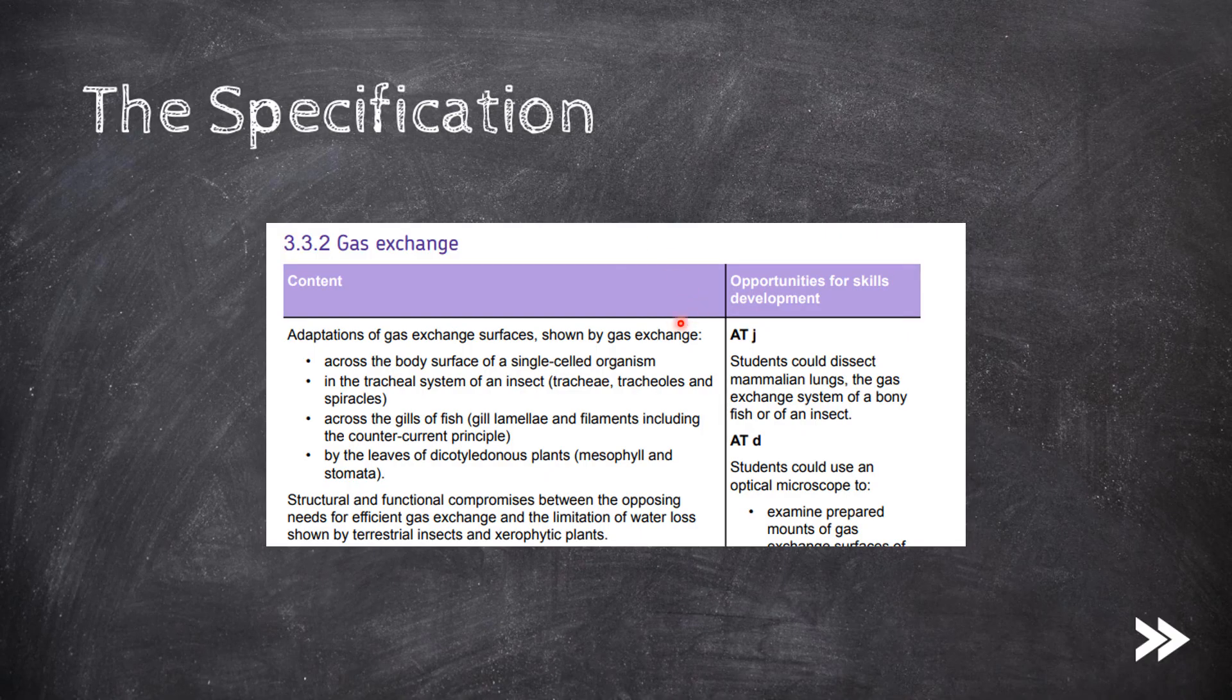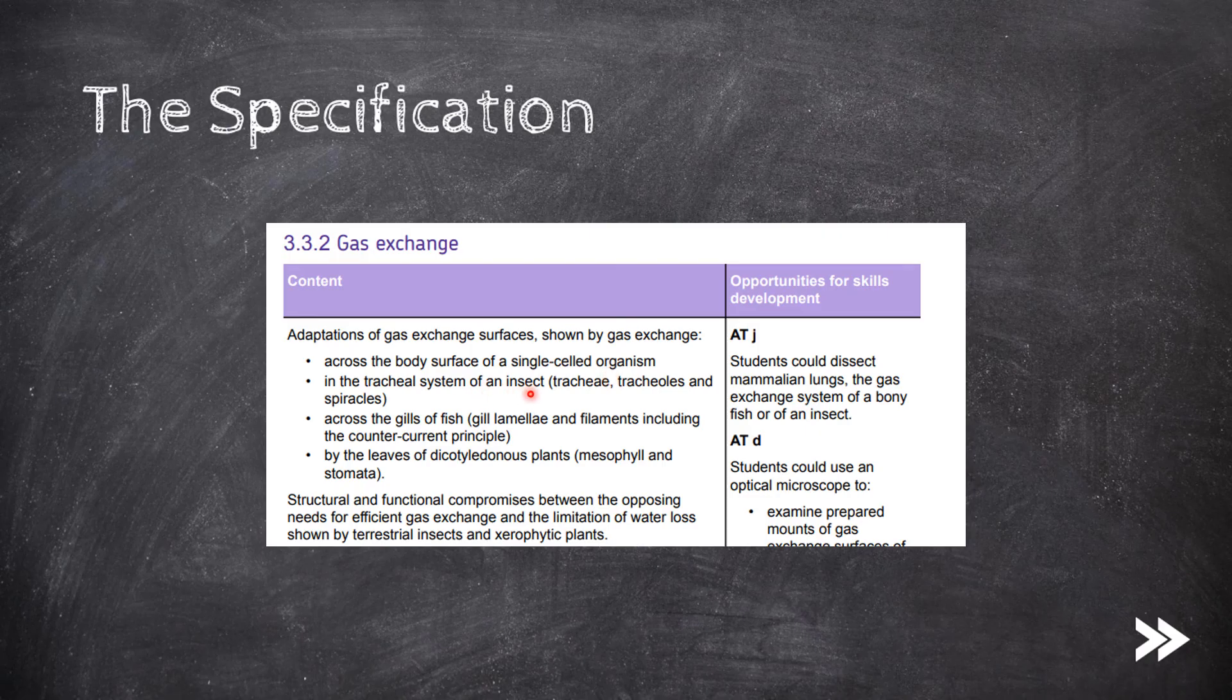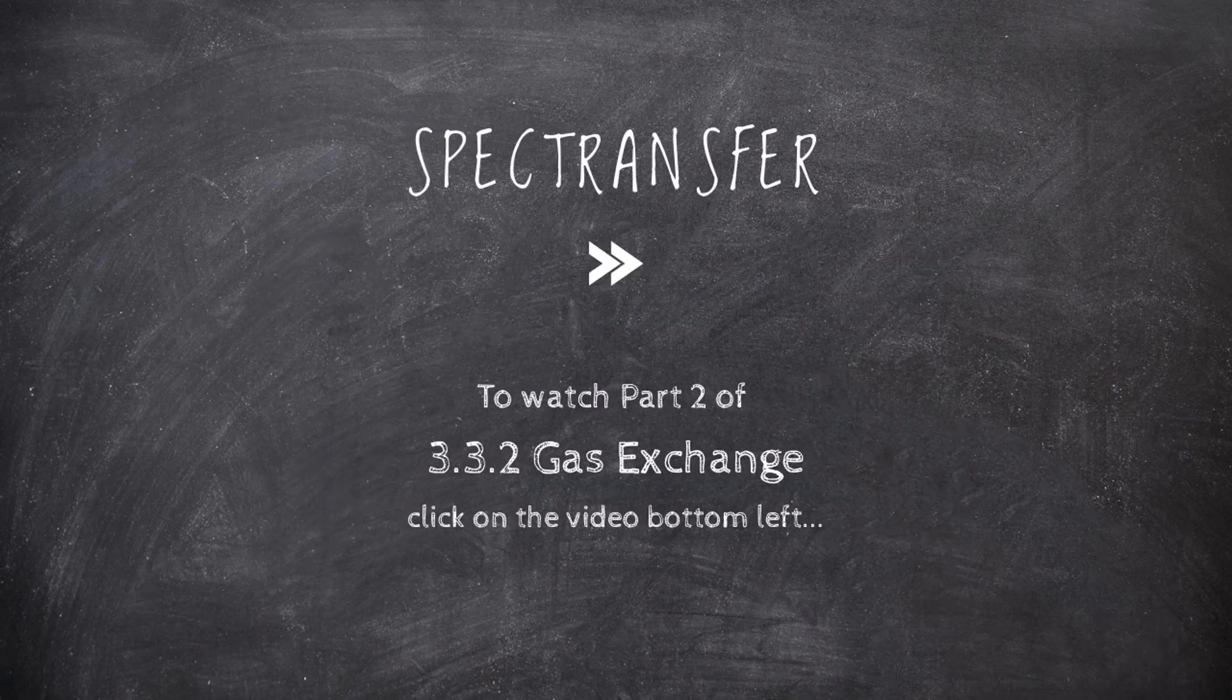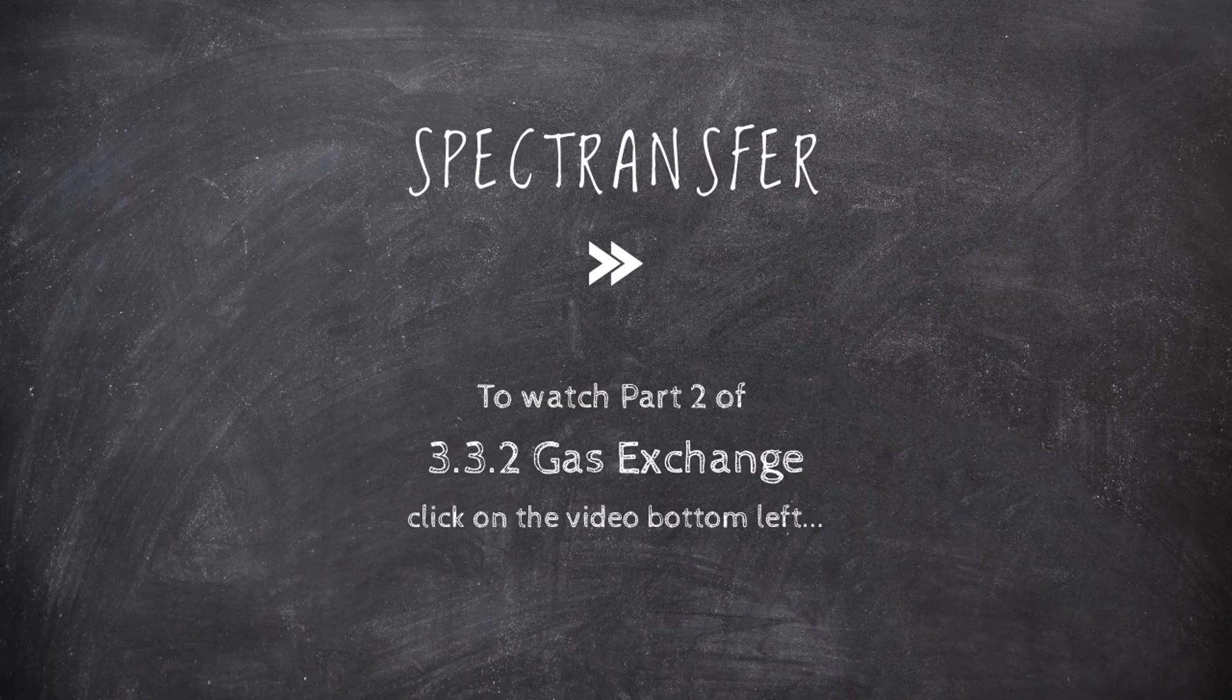Great, so now we've covered single-celled organisms, gas exchange in insects, the gills of fish and the leaves of dicotyledonous plants, whilst also looking at how water loss and the risk of desiccation is minimized. Thanks guys for watching, that's the end of part one of 3.3.2 gas exchange. To watch part two just follow the link bottom left, adios.